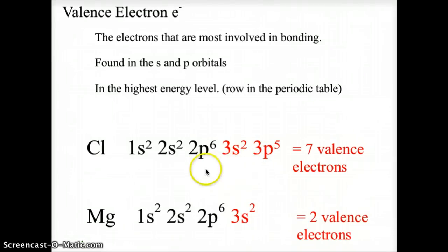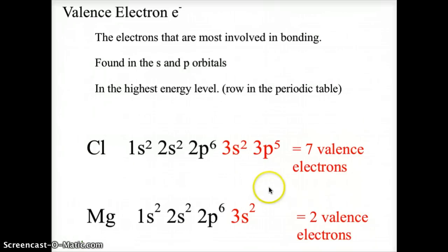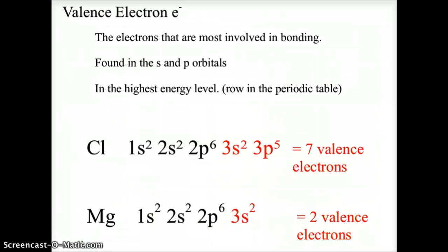For magnesium, we have 1s2, 2s2, 2p6, 3s2. Again, it's the third energy level, s orbital, 2 electrons, giving magnesium 2 valence electrons.